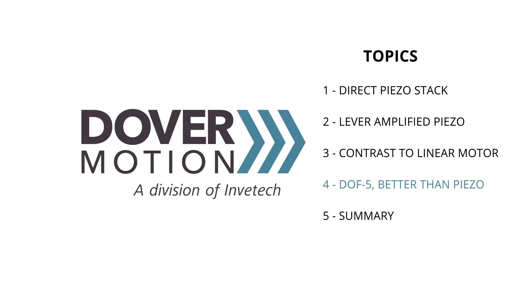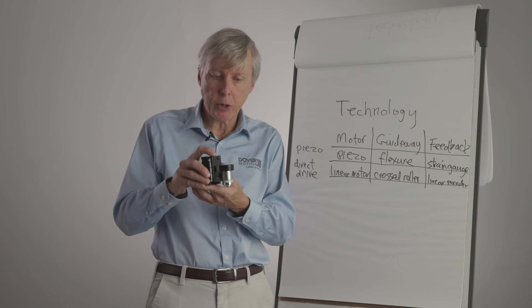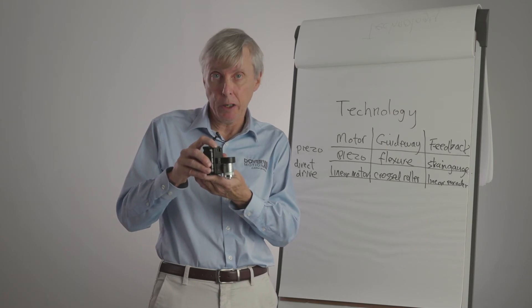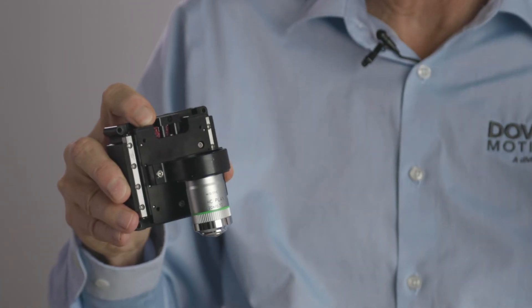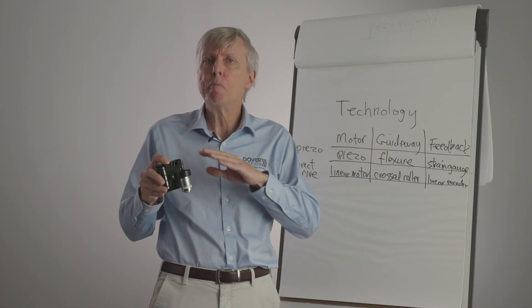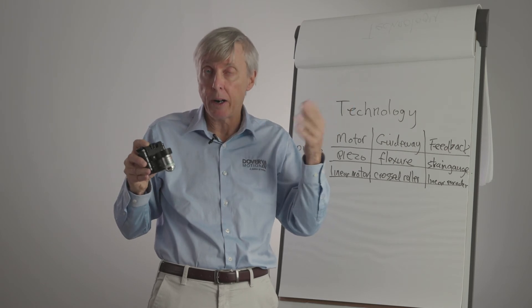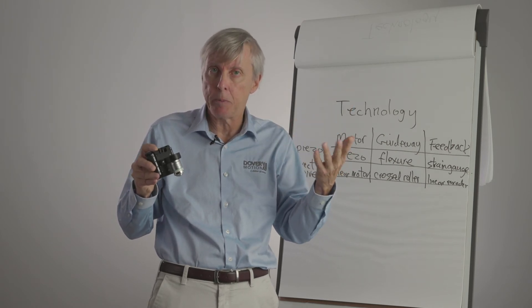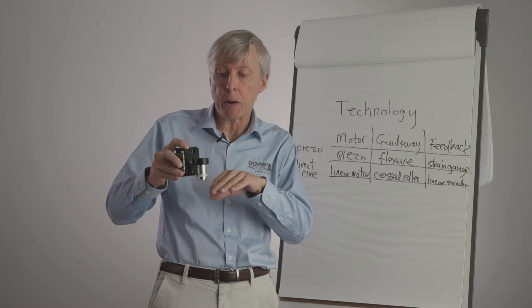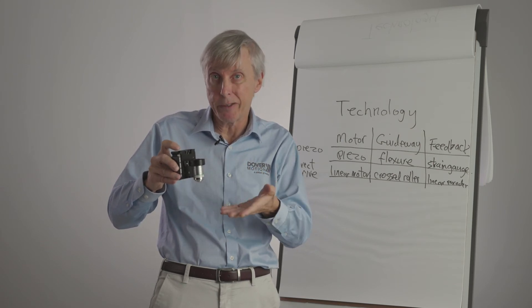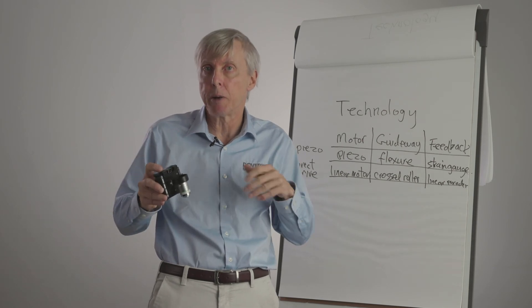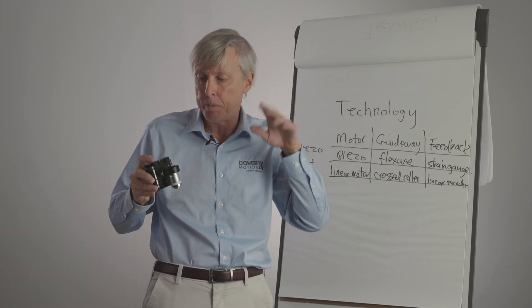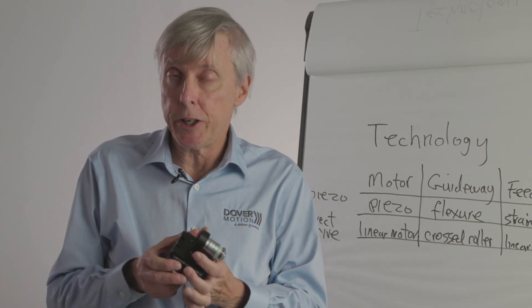At Dover Motion, we've developed a particular product for the microscope focusing market, which we call the DOF-5. The five, because it has five millimeters of stroke, massively higher, an order of magnitude or more higher than even a lever amplified piezo, which gives you plenty of opportunity to get the expensive microscope objective up and out of the way when you're loading a sample or unloading a sample, or if there are parts on the sample that stick up.